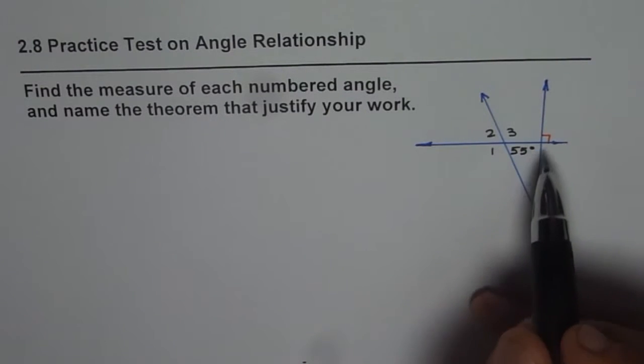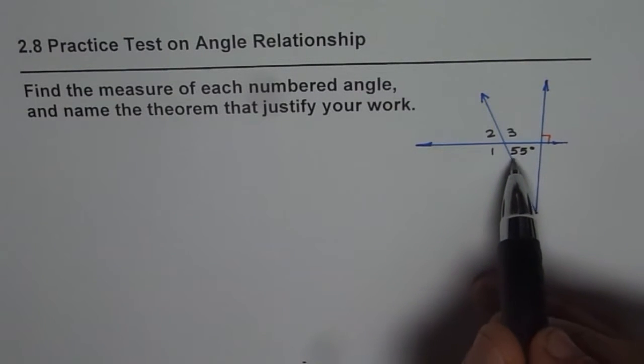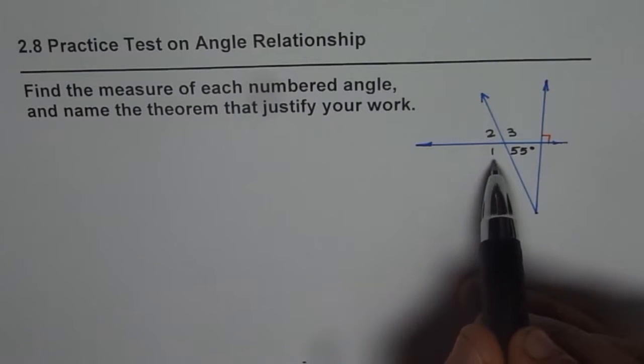In this particular example, we are given two lines which are intersecting at 90 degrees. The other line crosses at 55 degrees. We need to find angle 1, 2, and 3.